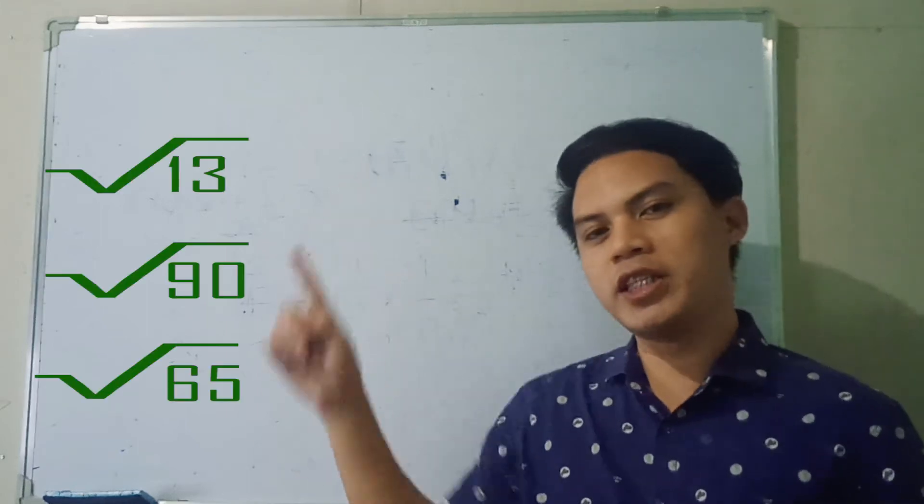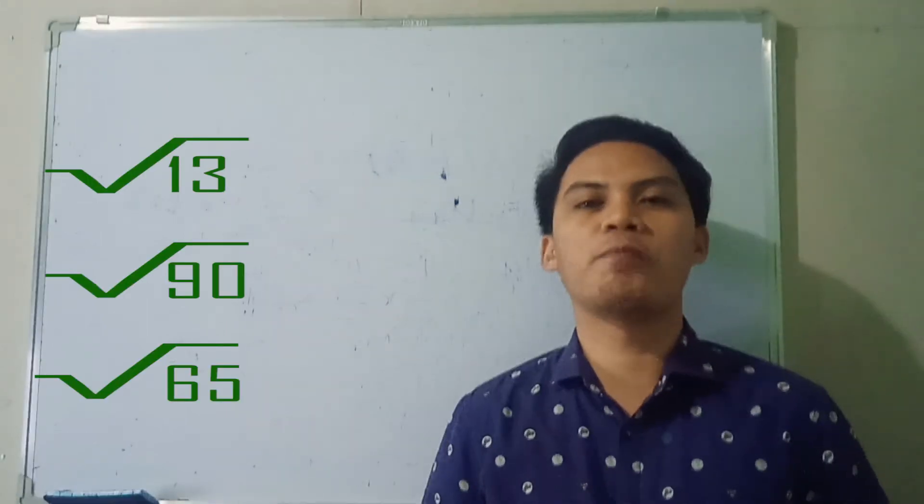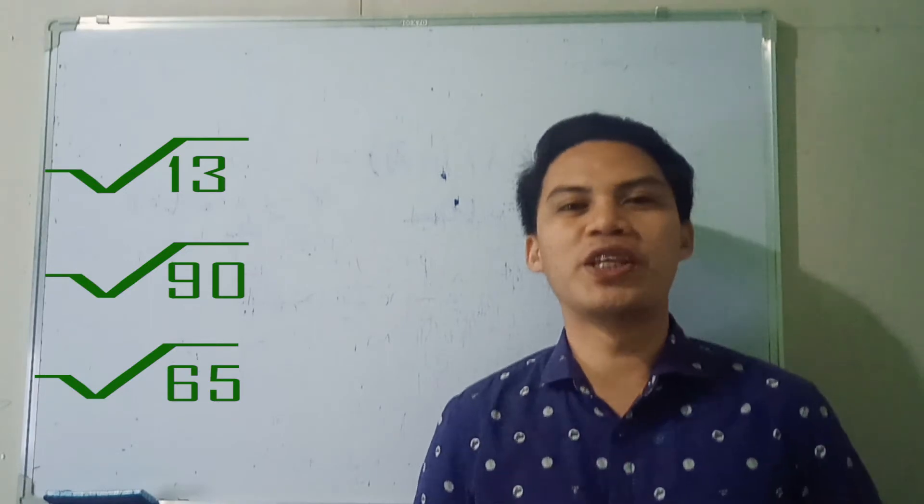How are we going to plot these irrational numbers on a number line? Find out in this video.